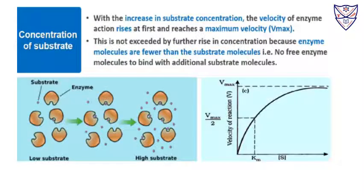If we increase substrate concentration, then the velocity of enzyme action rises at first and then reaches a maximum velocity. Beyond this point we cannot exceed because the enzyme molecules are fewer than the substrate molecules — no free enzyme is left, so the substrate cannot bind further. This is the maximum velocity. Generally, if we increase substrate concentration, the rate of reaction will increase up to that point.